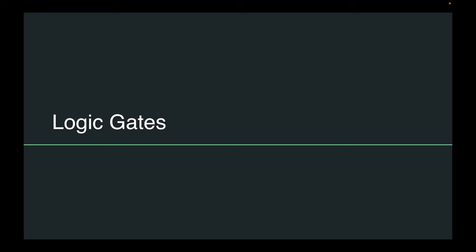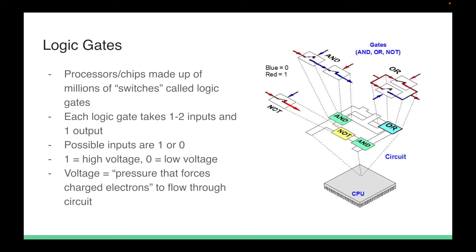The last section is logic gates. A logic gate takes one or two inputs of one or zero and outputs either a one or a zero. A one is represented by a high-voltage electrical signal; a zero by a low-voltage signal. A CPU is made up of thousands or millions of these logic gates configured into patterns that represent any operation the CPU would want to conduct.